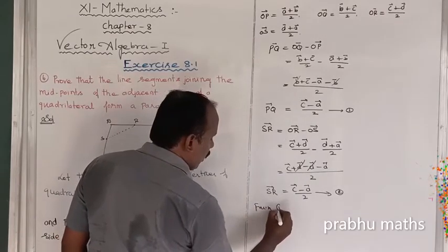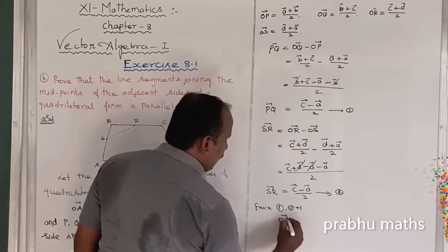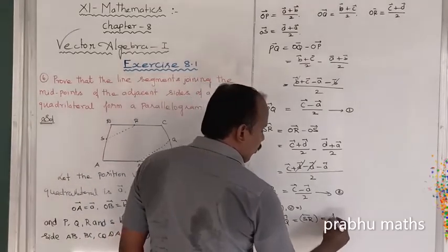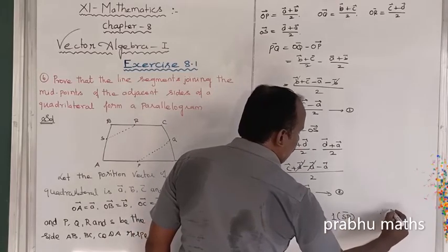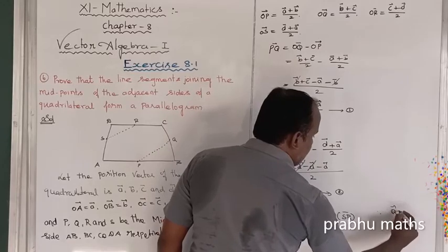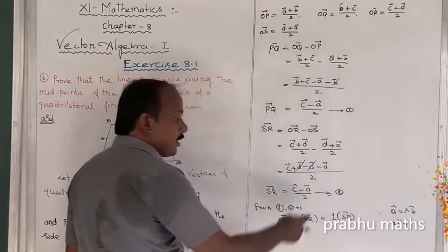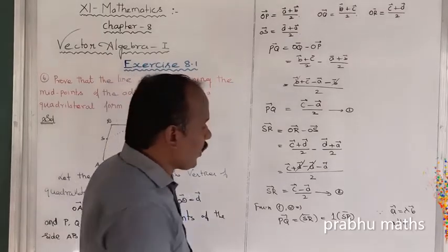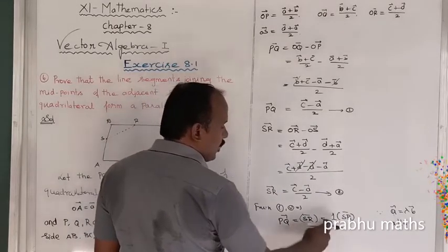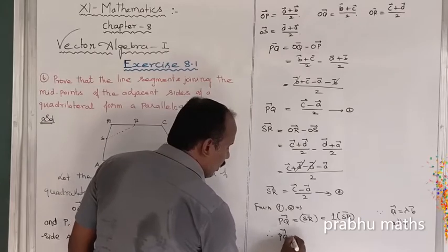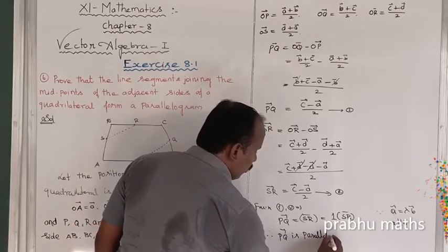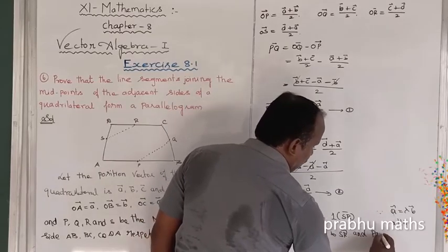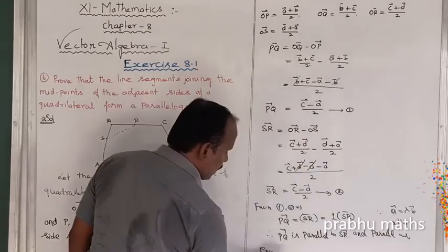From equations 1 and 2, PQ vector equals SR vector, which implies PQ vector equals 1 times SR vector. By the definition of parallel vectors, A vector equals lambda times B vector implies A is parallel to B. Therefore PQ equals 1 times SR, so PQ is parallel and equal to SR.